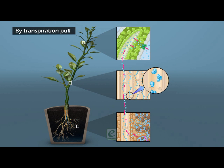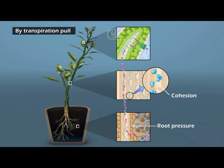This upward movement of sap is brought about by virtue of one or more forces acting simultaneously, such as root pressure, cohesion and adhesion of water, transpiration pull, and capillarity action.